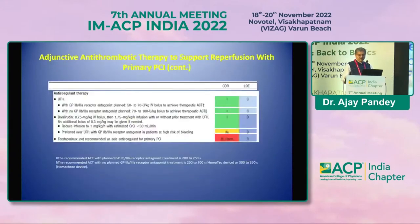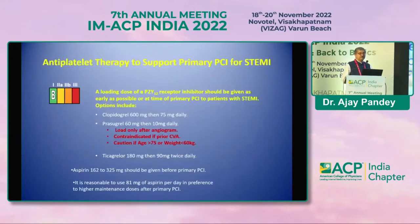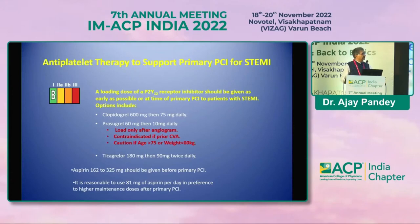Adjunctive and antiplatelet therapies are critically important. Loading doses: clopidogrel 600 mg followed by 75 mg maintenance; prasugrel 60 mg loading followed by 10 mg; ticagrelor should be given at the recommended loading dose as well.